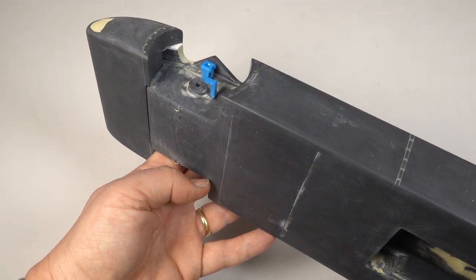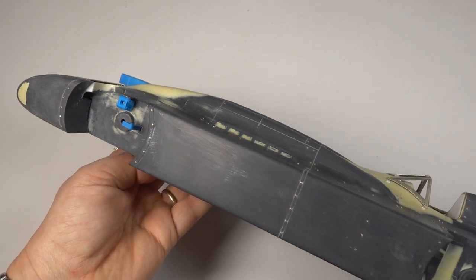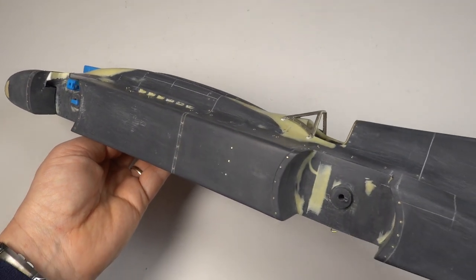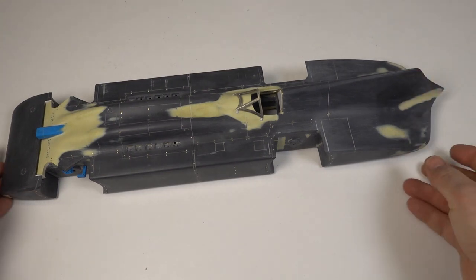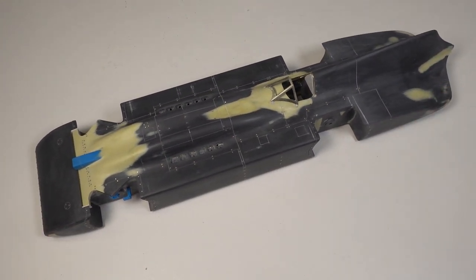I also added some 3D printed front suspension detail and bent up some small standoffs which I added to the underside just in board of the wheels. These will keep the body off the desk while it's being sprayed.